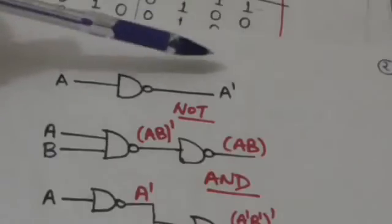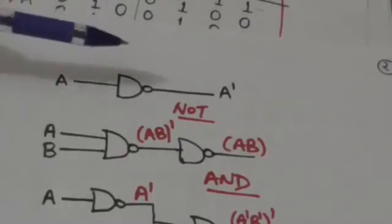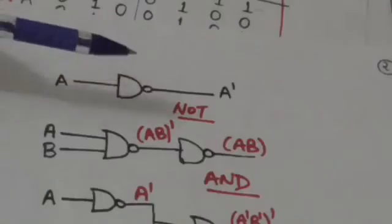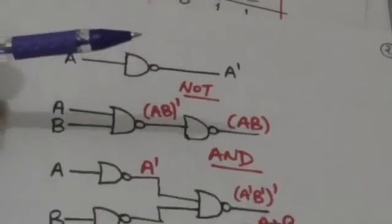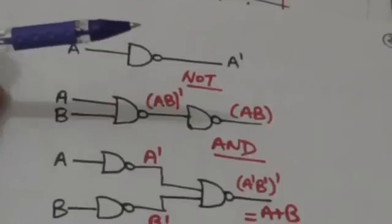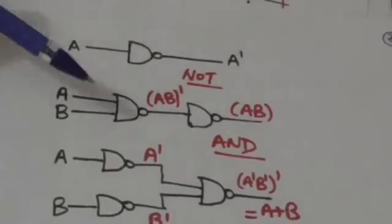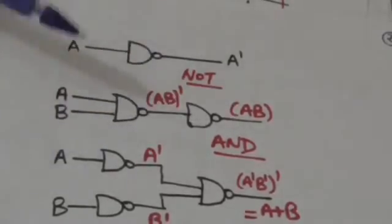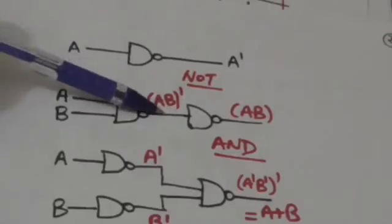So we can implement NOT operation by a NAND gate. Now, how we can implement AND operation by NAND gates — look at this circuit here. The output of this NAND gate is the complement of A and B.